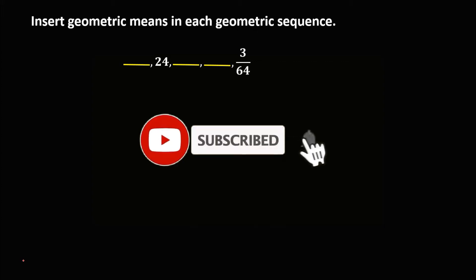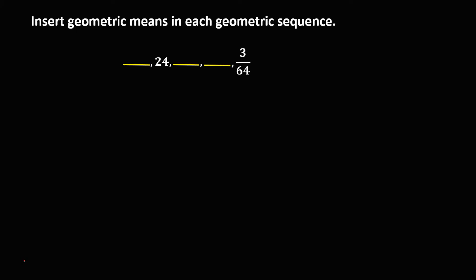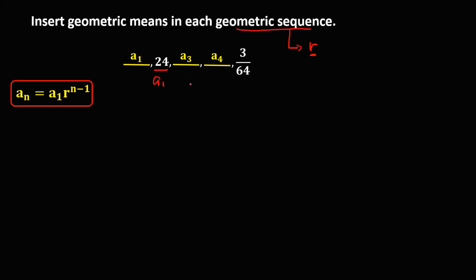Let's work on this problem: insert geometric means in a geometric sequence. We're looking for the values of a sub 1, a sub 3, and a sub 4. Since this is a geometric sequence, we first need to find the common ratio R. In the given, we assume that 24 is a sub 1, followed by a sub 2, a sub 3, and the last term a sub 4.